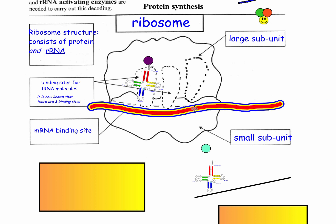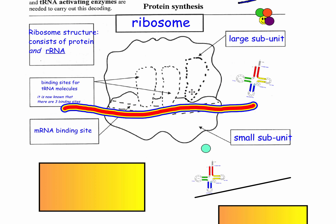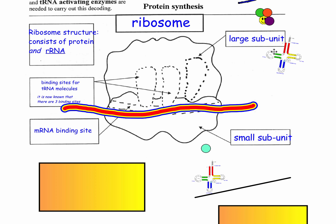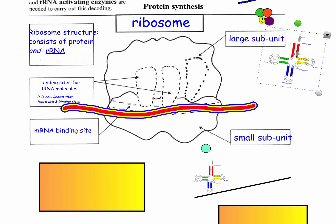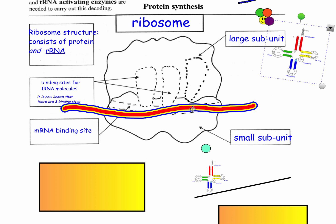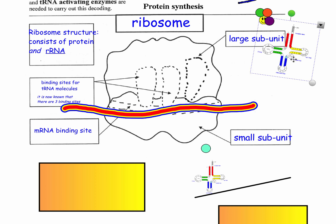As the ribosome moves along the mRNA — moving to the right, from the five prime to the three prime end — there are codons: sequences of three letters (A's, U's, C's, and G's). A tRNA molecule with the matching anticodon — the complementary three letters — will come over. The anticodon at the bottom matches the codon on the mRNA.